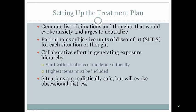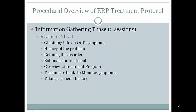The information-gathering phase involves obtaining OCD symptom history, defining the disorder, explaining the rationale for treatment, giving an overview of the treatment program, and teaching the patient to monitor symptoms using SUDS scales. Take a general medical history too — for example, an individual with a TBI who subsequently developed obsessive-like symptoms has a stronger biological basis, and understanding that aids treatment.